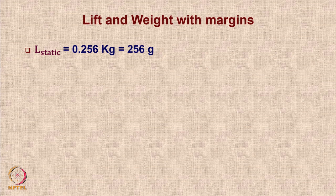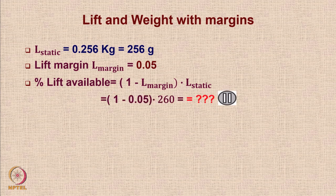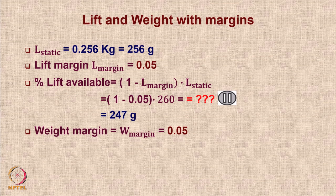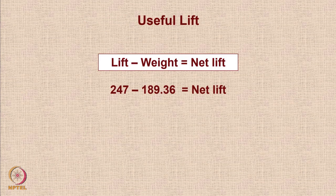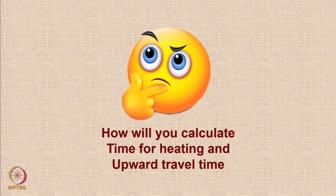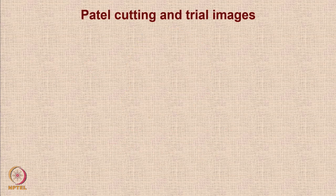The total mass of the system — payload plus fuel plus structure — is the sum of these three items, coming to 180.35 grams. Static lift was calculated at 256 grams, with a 5 percent lift margin. Available lift is (1 − 0.05) × 260 = 247 grams. The net lift comes to 64.64 grams. An open-ended exercise for you: calculate the time for heating, since it must be completed within 4 minutes and upward travel is a maximum of 2 minutes — use Newton's second law F = ma, where the buoyant force gives the acceleration.